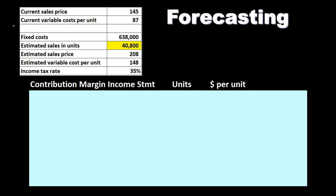Obviously, in real life, to forecast into the future, you're going to start with the prior year information and then do any kind of thought experiments to think about how you're going to adjust that into the future. Is the price going to go up? If the price goes up, then possibly you sell a little less. Maybe you increase advertising and the volume will change. These adjustments will be taking prior year numbers and then making adjustments with it.